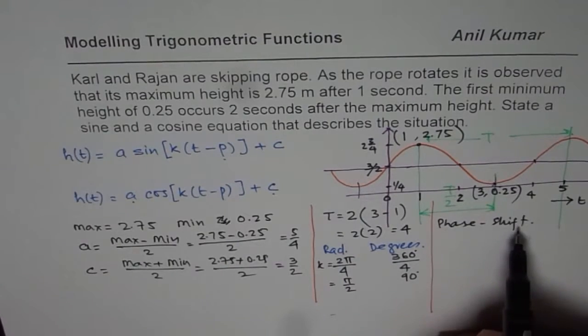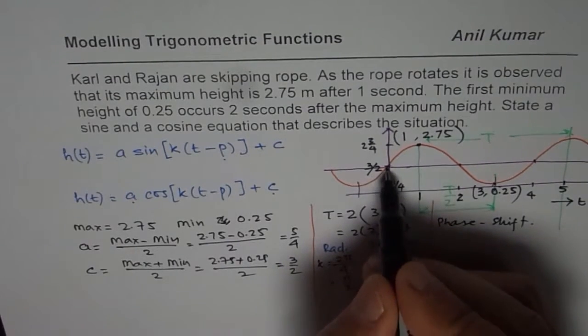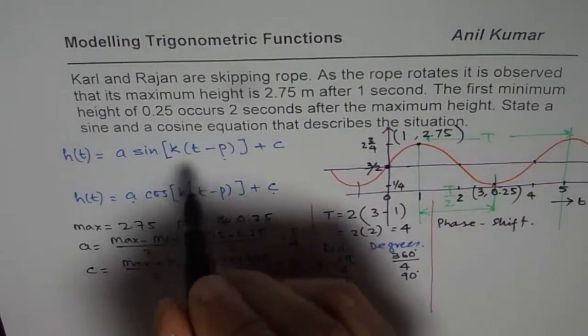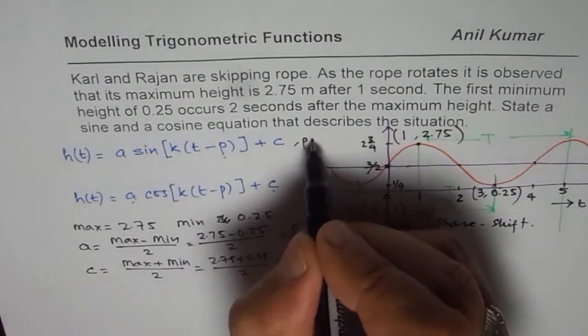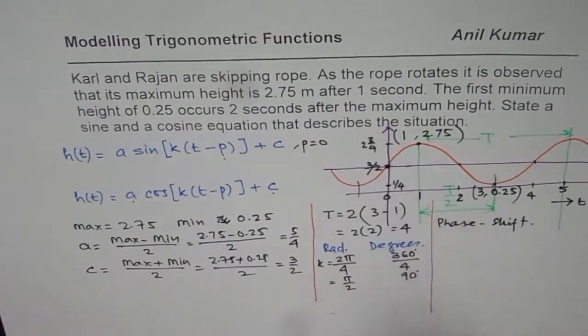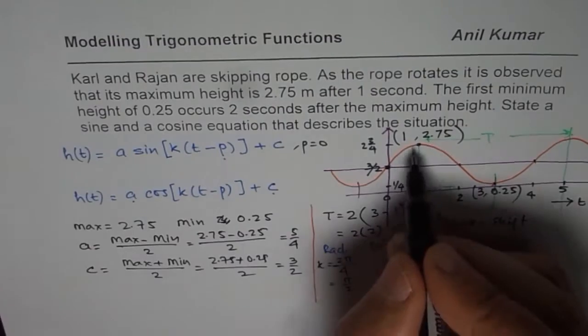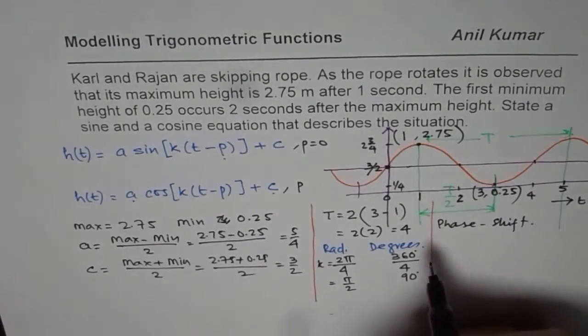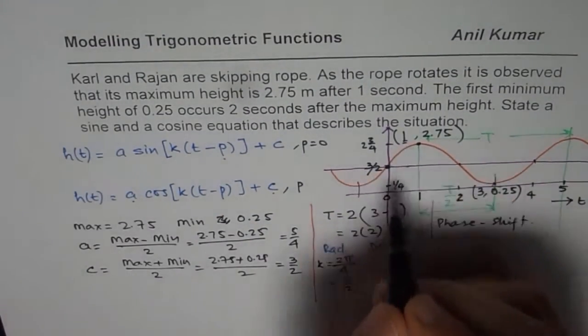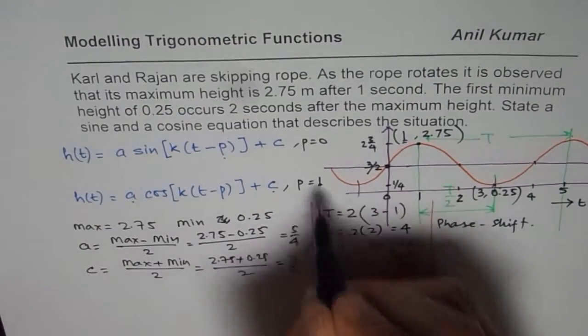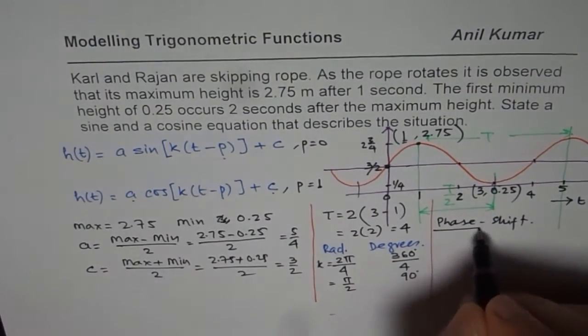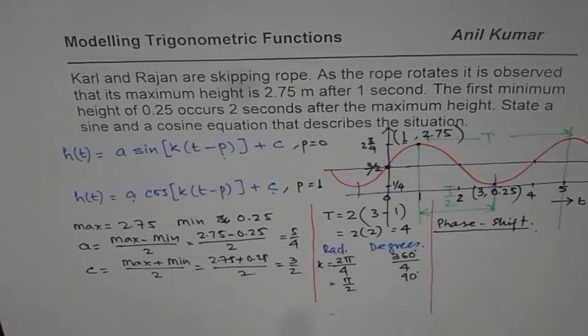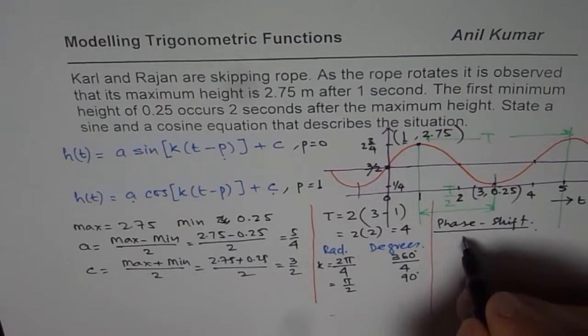Now as far as the phase shift is concerned, if you are considering the sine wave, then the phase shift P is zero. Do you see that? Because it starts right from there. But if you are using cosine wave, then the phase shift is 1, the first maximum you are looking at. So those are the phase shifts. For phase shift, you have to always consider the starting point.